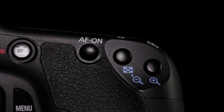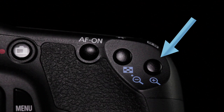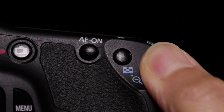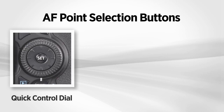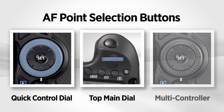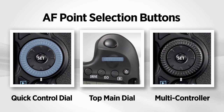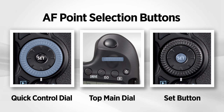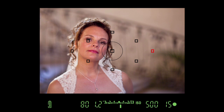To manually select a single AF point, the default method is to press the AF point selection button and turn the quick control dial, the top main dial, or use the multi-controller and Set button. One at a time, the points will sequentially light up red and then return to automatic selection with all nine points lit up together.